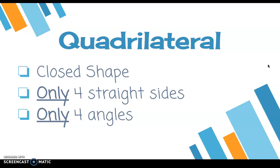The next new word is quadrilateral. A quadrilateral is any shape that is closed and only has four sides and only four angles. That means it cannot have more or less than four. Only some shapes will fit this definition — can you picture one in your mind right now?